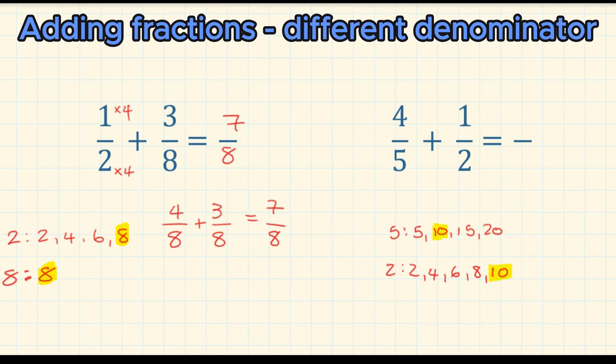So now equivalent fractions where the denominators are both ten. Five times two, do the same to the top, so that's eight over ten, plus two times five, one times five, that's five over ten, and that equals thirteen over ten.